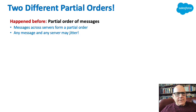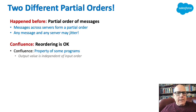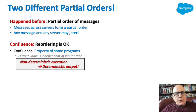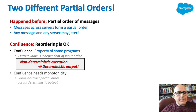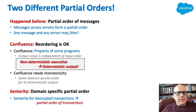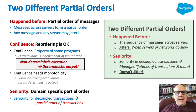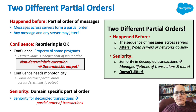There are two different partial orders in this system. Happened-before refers to the sequence of messages flowing across servers in the distributed system — and those messages form a partial order, but any message or server may jitter, so happened-before will jitter. Confluence says reordering is okay — it is a property of some programs where the output value is independent of the input order, giving you deterministic output even with non-deterministic execution order. Confluence needs monotonicity and an abstract partial order. For us, seniority is defined as a domain-specific partial order: the seniority for decoupled transactions is the partial order of transactions. Seniority does not jitter.